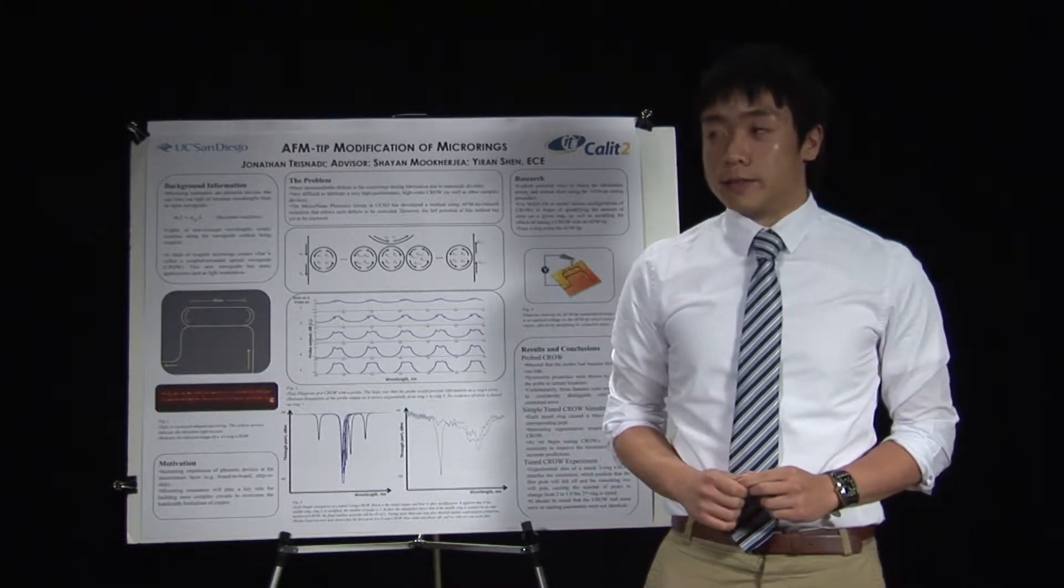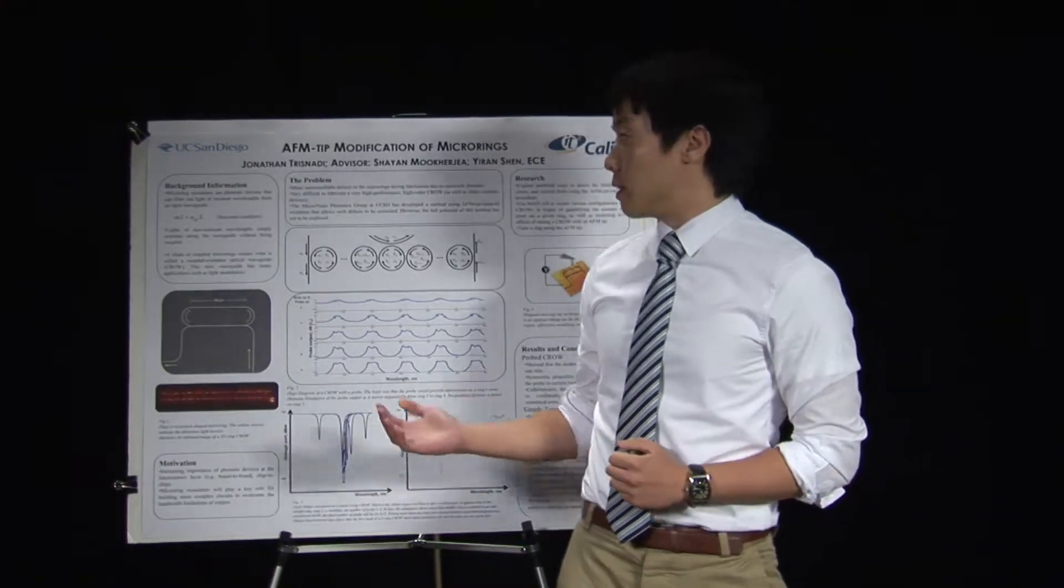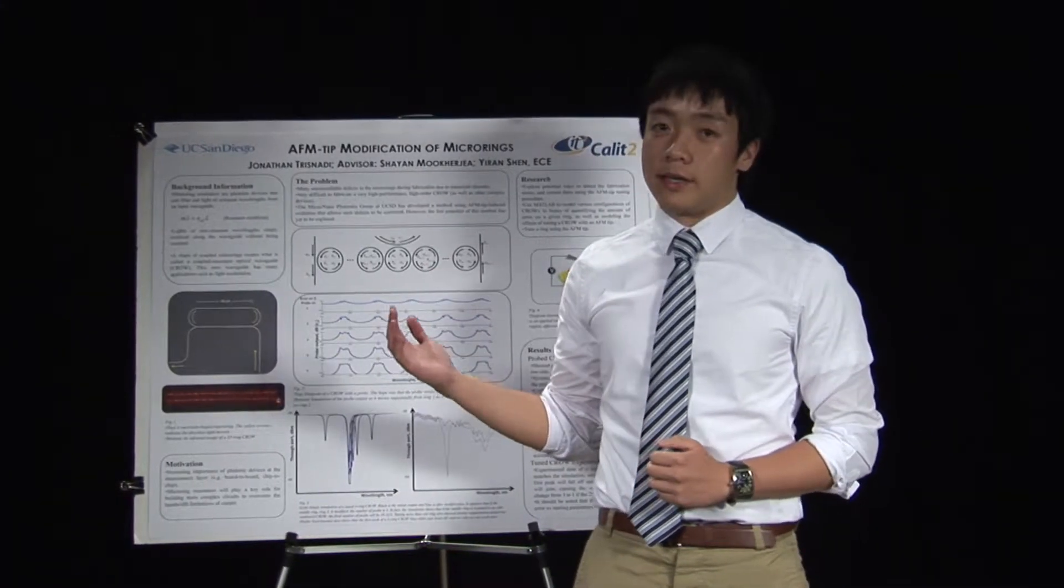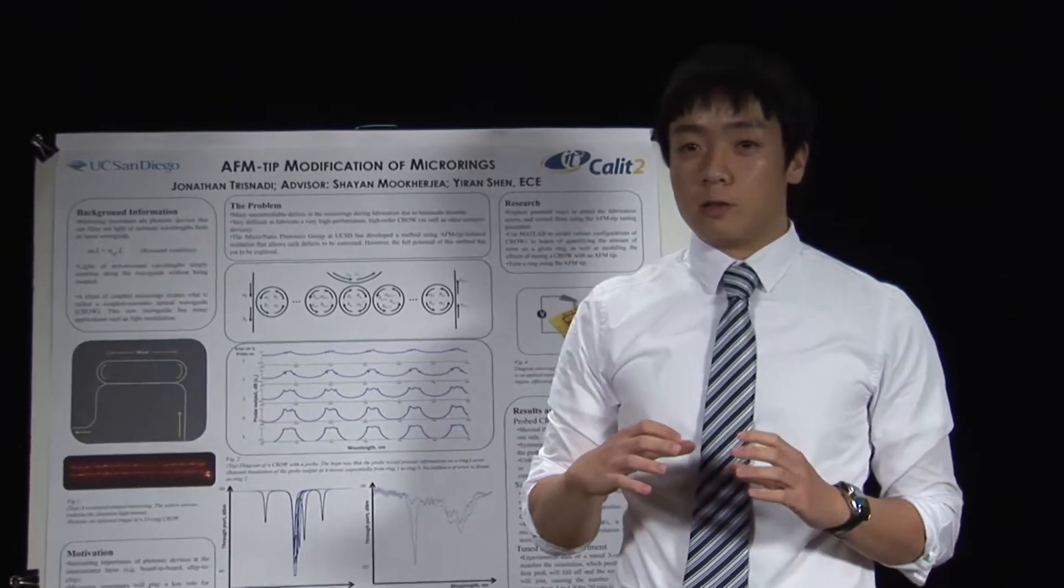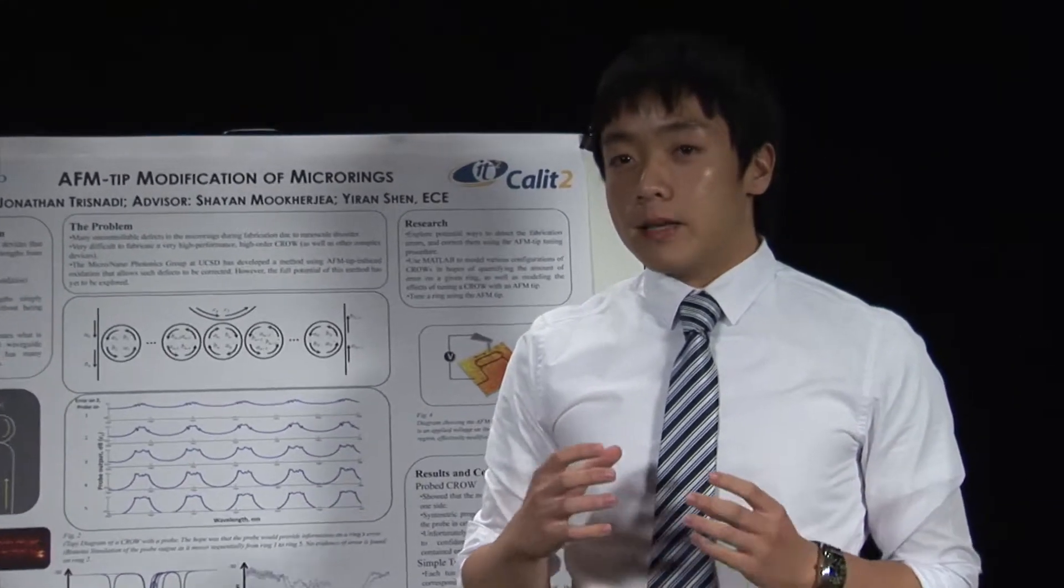So I'll begin with some background information. The most basic device that I'm working with is a micro ring resonator, which is a photonic device shaped in a circle or a racetrack. And its function is to filter out light of certain wavelengths, wavelengths that meet its resonance condition.